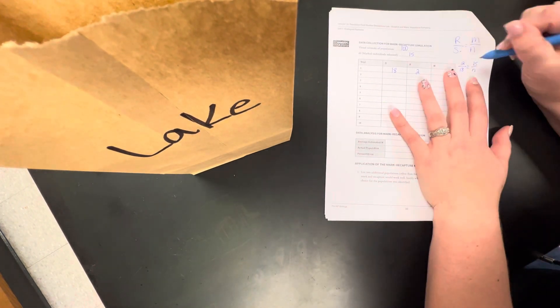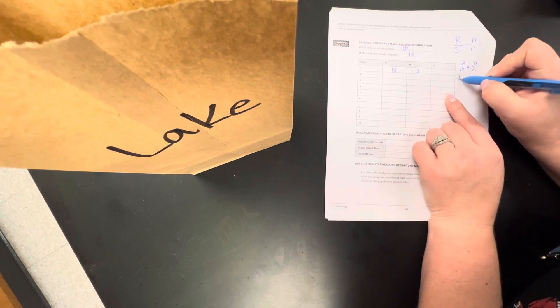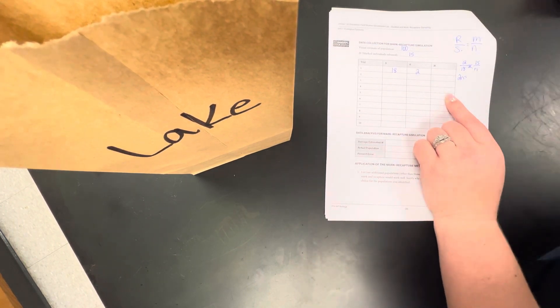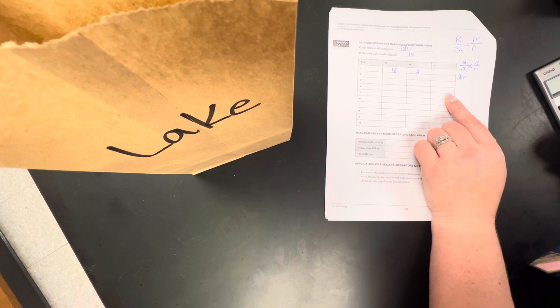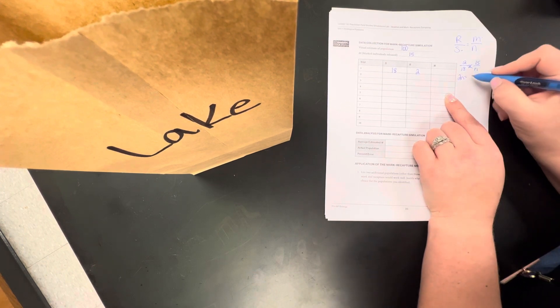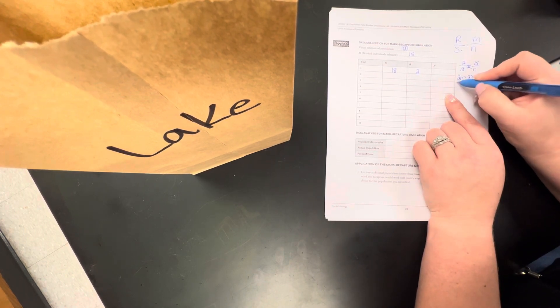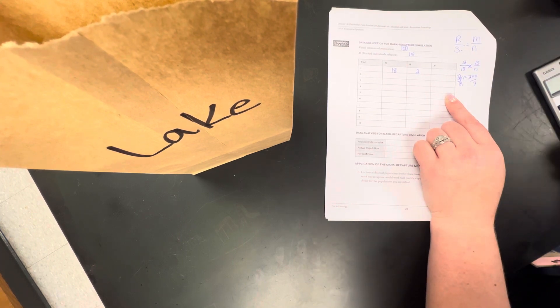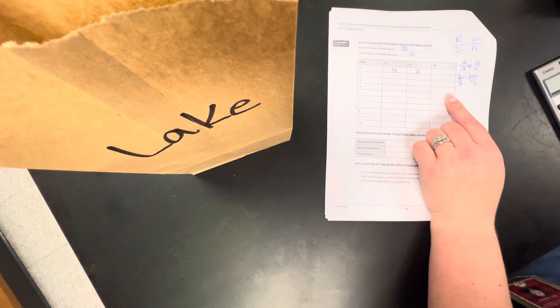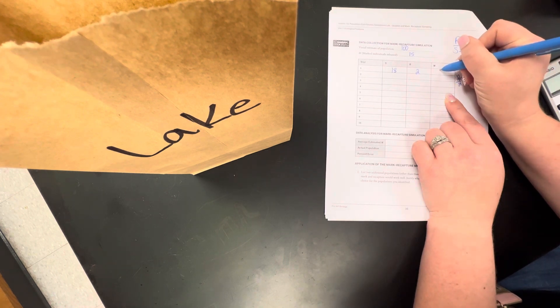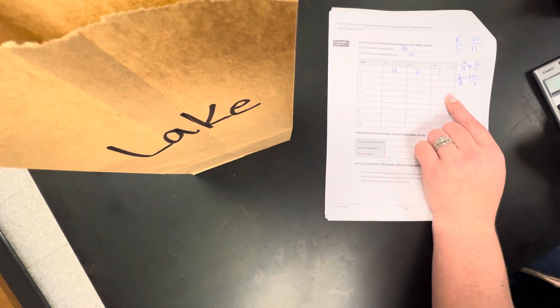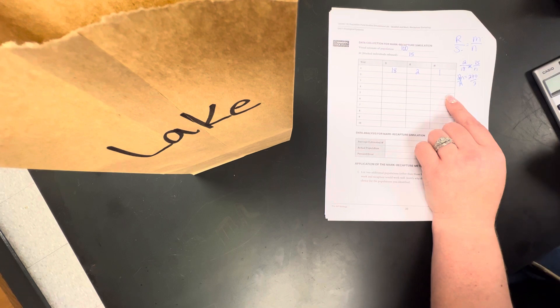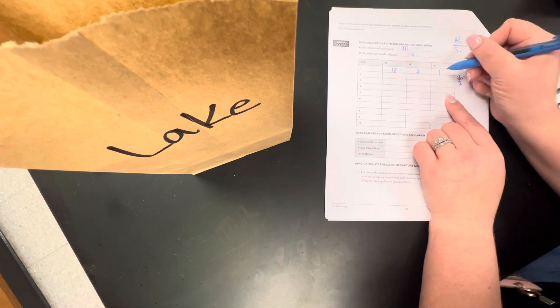So now I am going to cross multiply to solve for N. So I have 2N equals, got my calculator, 15 times 18, 270, divide by 2. I apologize, 135.